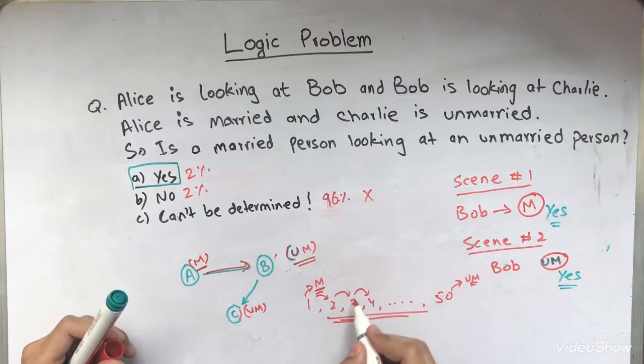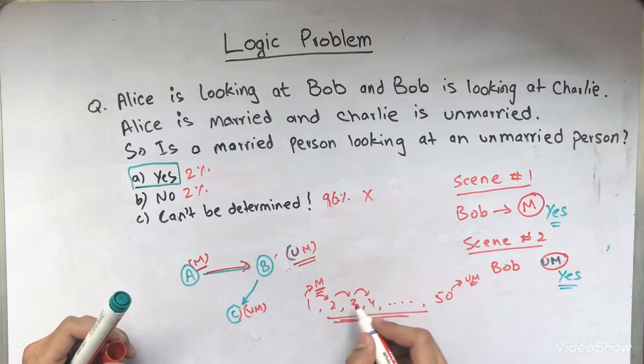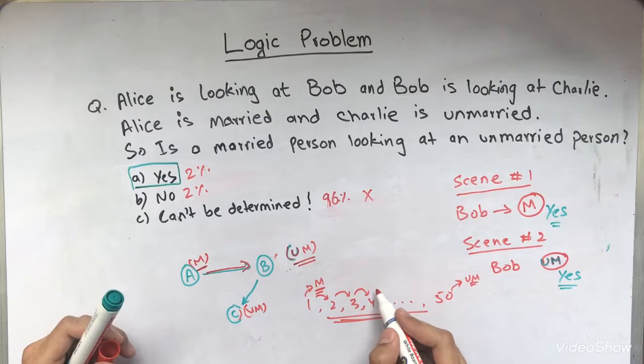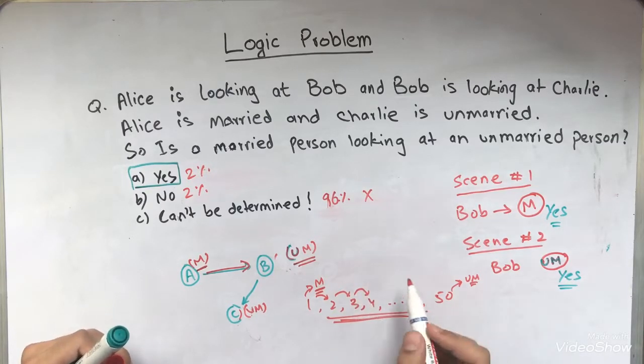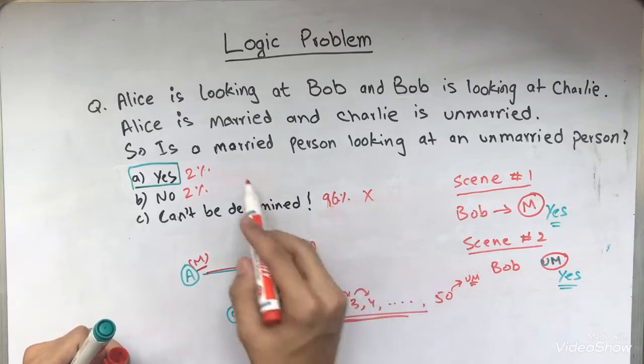But if we just consider that people be randomly married or unmarried, there has to be a situation when an unmarried person would be sitting at the back of a married person. So in that case, our situation would be verified.